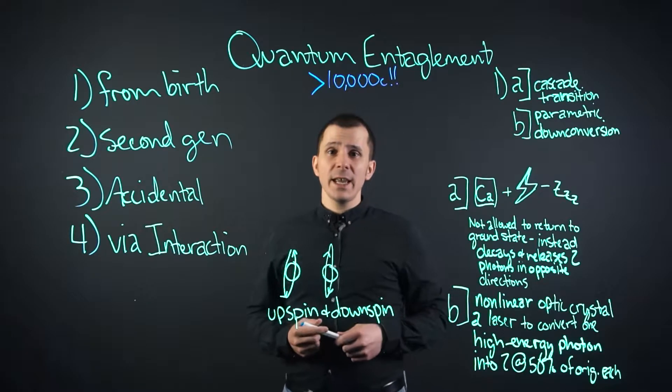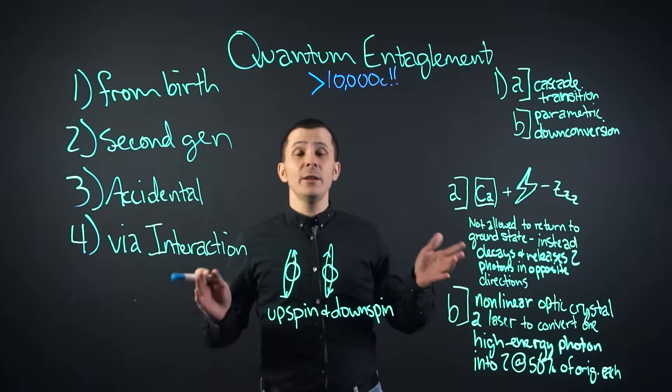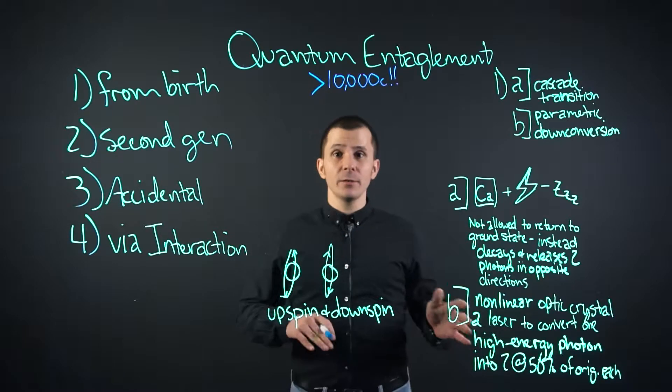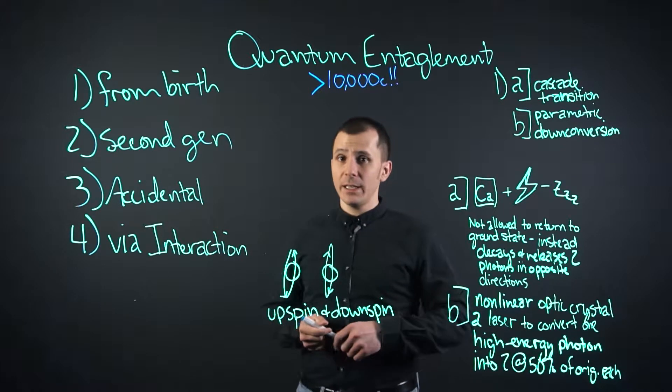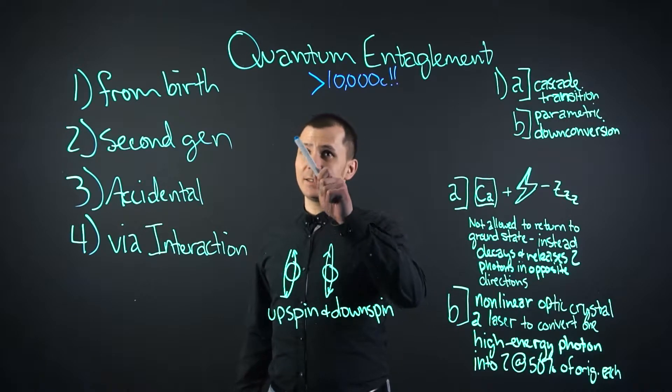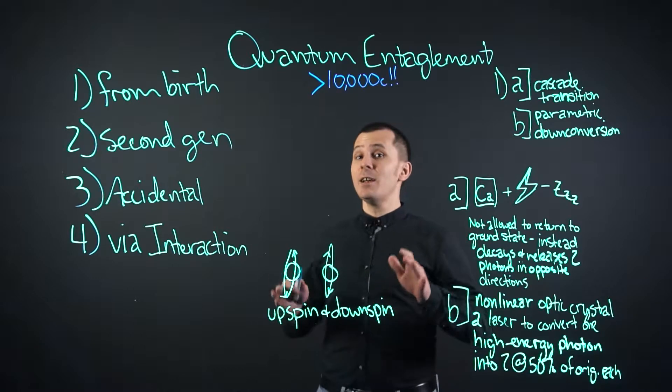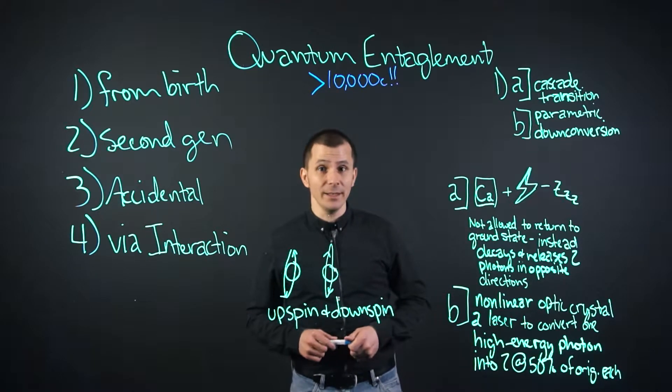Quantum entanglement is a dependency of two particles where when one is affected, the other also reacts. The transmission of this information happens at least 10,000 times the speed of light. That's right, more than 10,000 times the speed of light. That's crazy fast.